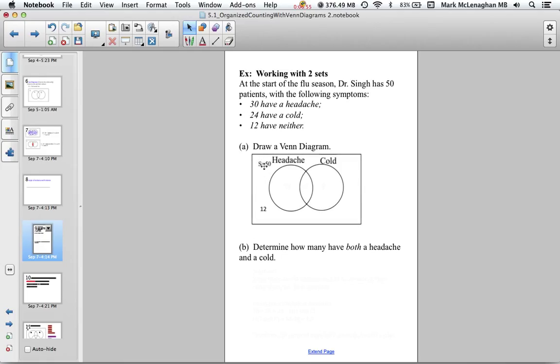There's your Venn diagram. There's the universal set of all the patients—50 patients. Some of them have headaches, some of them have colds, and 12 have neither. So we draw the circles outside.